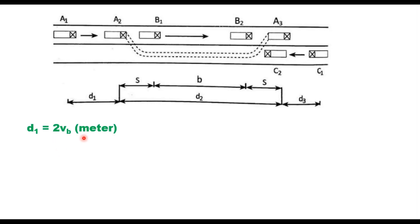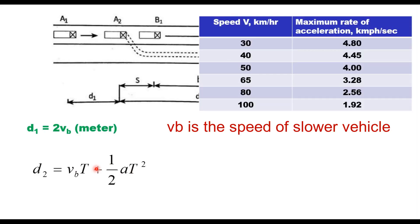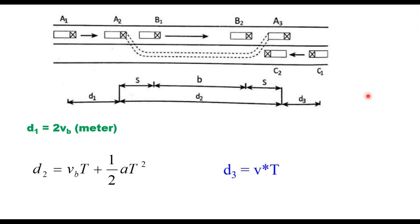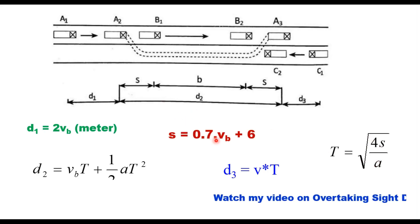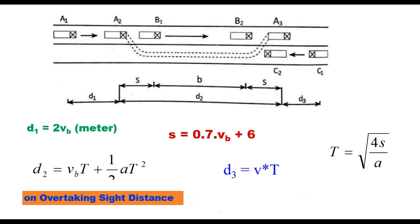d1 is the distance traveled by vehicle A during reaction time, with reaction time taken as 2 seconds. d2 is the distance traveled by the overtaking vehicle during overtaking time at speed vb. The acceleration rate 'a' is generally high during overtaking; IRC 73 suggests maximum acceleration rates in km/h per second depending on initial speed — for example, 4.8 at 30 km/h and 2.56 at 80 km/h. d3 is calculated using overtaking time T = √(4s/a), where s = 0.7 × vb + 6. These distances are discussed in detail in the earlier video on overtaking sight distance.